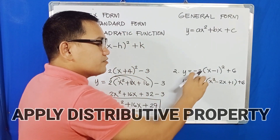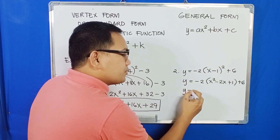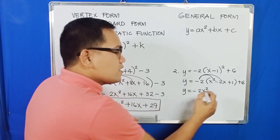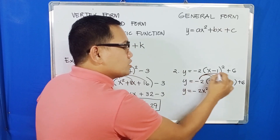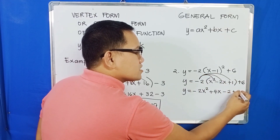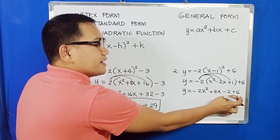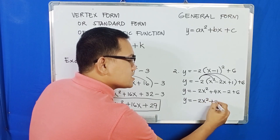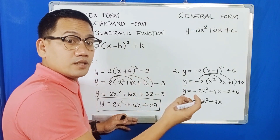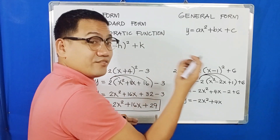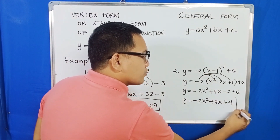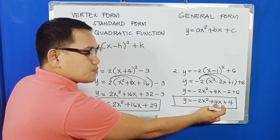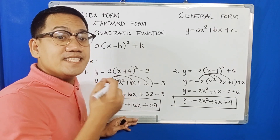Distributing negative 2: negative 2 times x squared gives negative 2x squared; negative 2 times negative 2x gives positive 4x; negative 2 times 1 gives negative 2. We copy plus 6. Combining constants, negative 2 plus 6 gives positive 4. So the general form is y equals negative 2x squared plus 4x plus 4, where a is negative 2, b is positive 4, and c is positive 4.